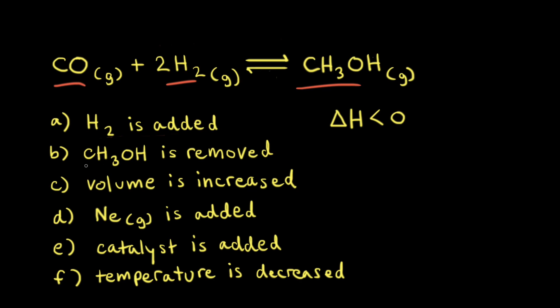In part B, some methanol is removed. So if we're decreasing the concentration of our product, the equilibrium is going to shift to make more of our product. Therefore, the equilibrium will shift to the right.